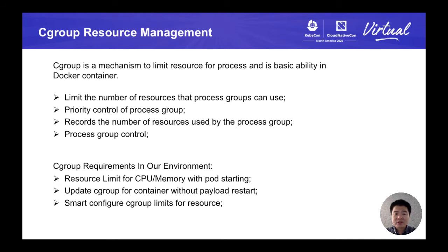But it is not enough. First, we can only configure CPU or memory in the container spec — limitation for storage is not supported. Secondly, the limitation is set when the container starts and can't be changed while the container is in a running state. Also, the limitation is only configured for containers and not for pods. So we need a deployable service that can dynamically update the cgroup limitation, both for containers and pods, without a payload restart. With a central smart controller, resource limitation can be automatically configured by cgroup policy.